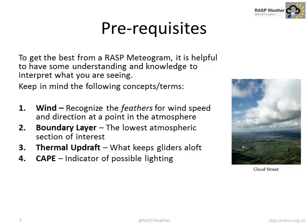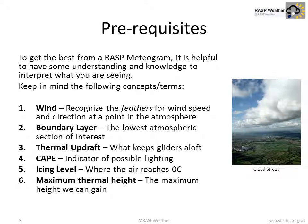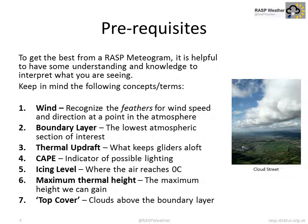CAPE: an indicator of possible thunder or lightning. Icing level: where the air reaches 0 degrees C. Maximum thermal height: the maximum height we can gain in the boundary layer. Top cover: clouds above the boundary layer.